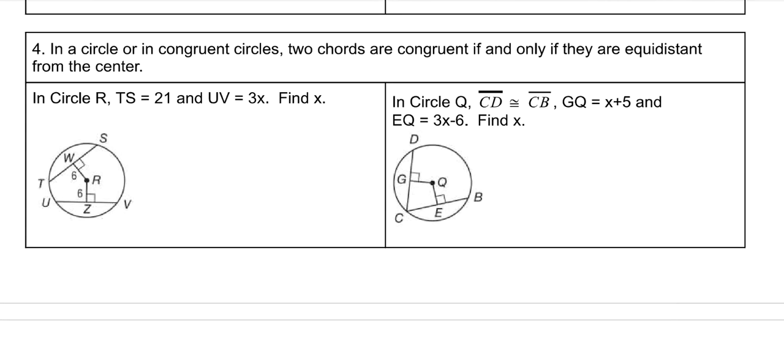All right, the next one says, in a circle or in congruent circles, two chords are congruent if and only if they are equidistant from the center. So in this case, what it's saying is you have these chords, and you know that they are the same distance from the side, like this, then that means that this whole distance and this whole distance would be the same. That's what it's trying to say. As long as you know that the distance to the chords from the center are the same, then you know the chords are the same. And vice versa. If you know the chords are the same, then you know they're the same distance to the center.